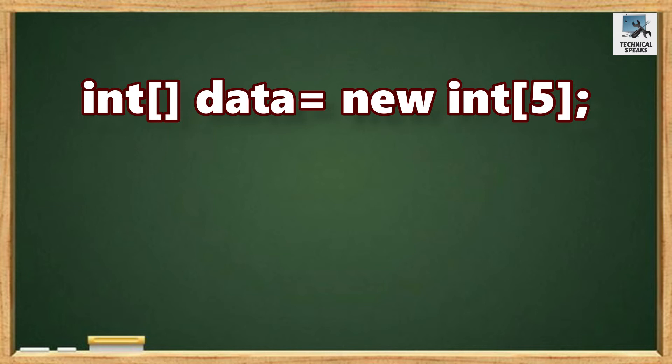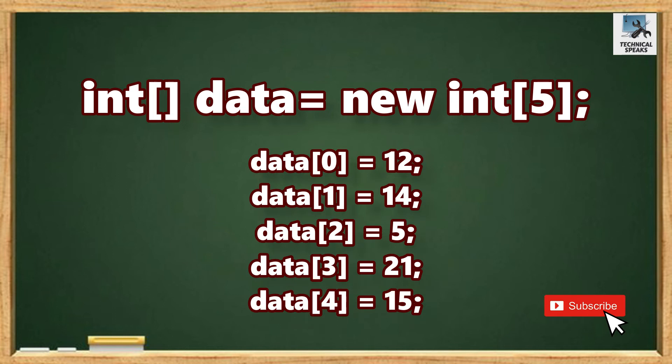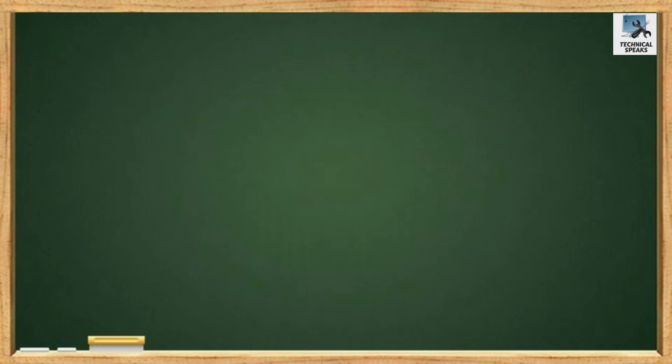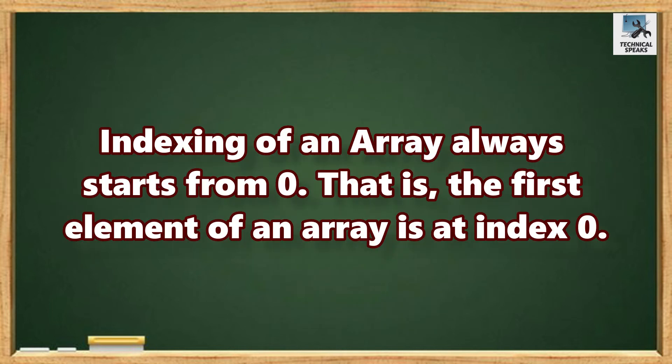We can initialize the array by index number as data[0] equals 12, data[1] equals 14, data[2] equals 5, data[3] equals 21, and data[4] equals 15. Important points to keep in mind: indexing of